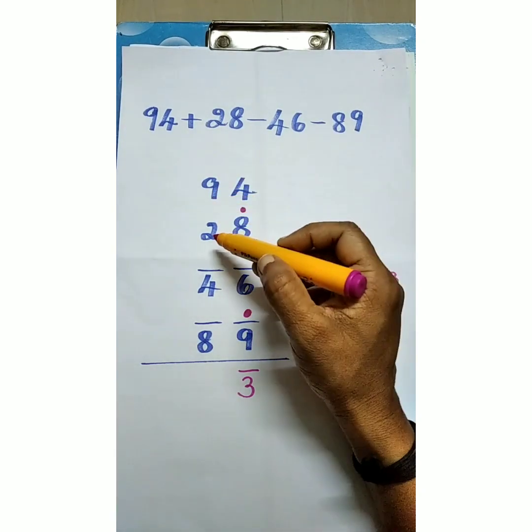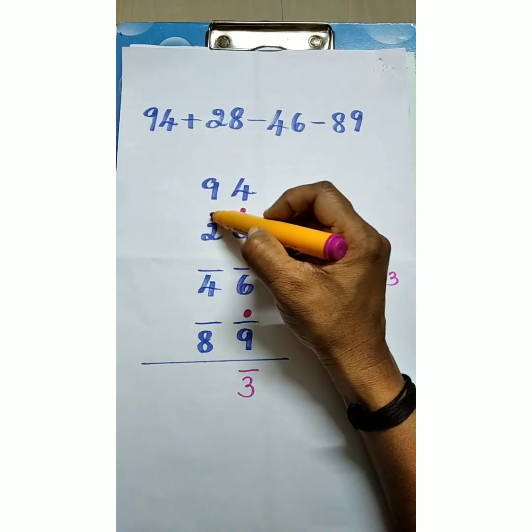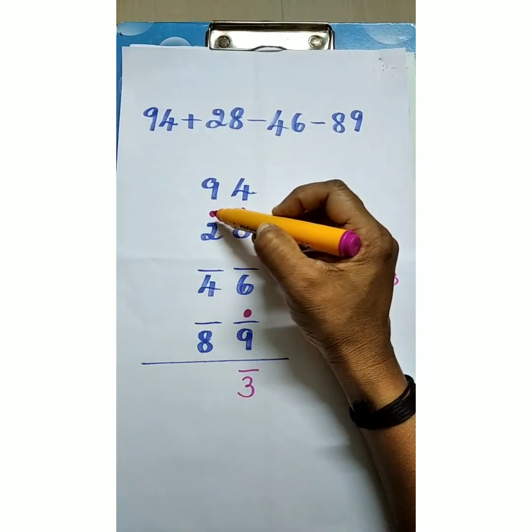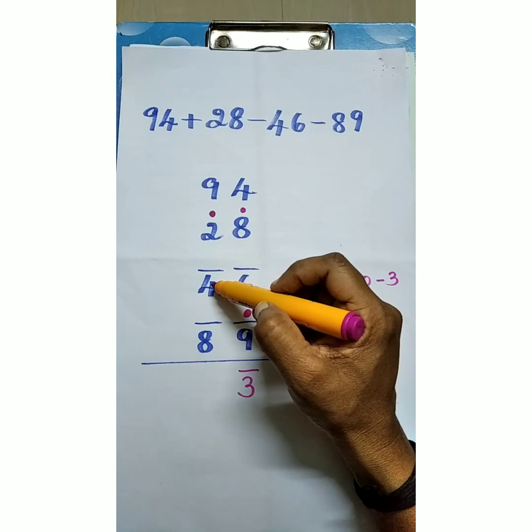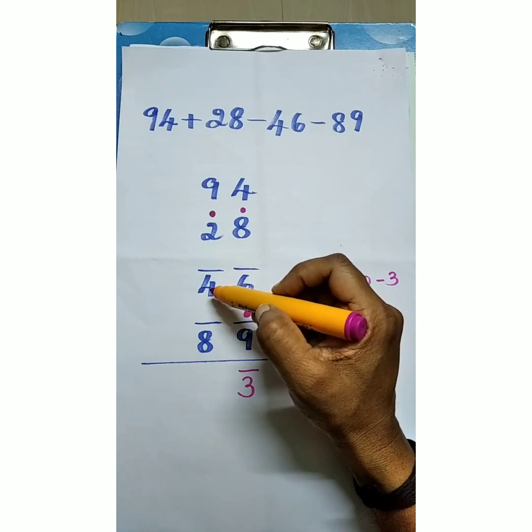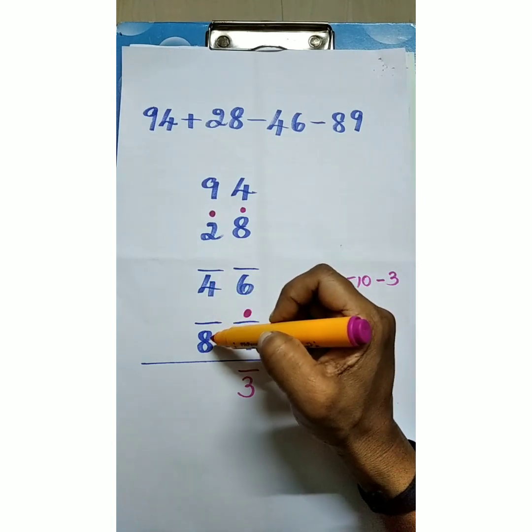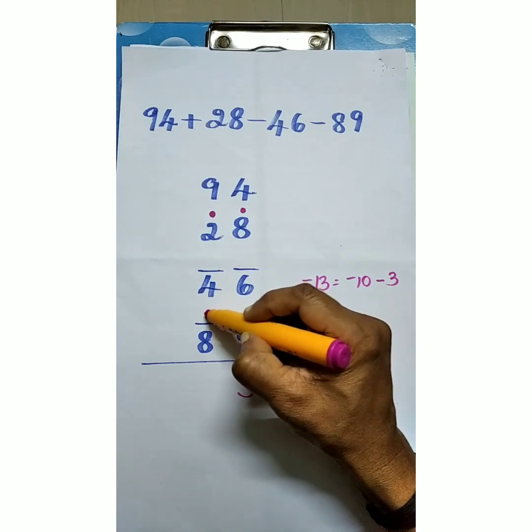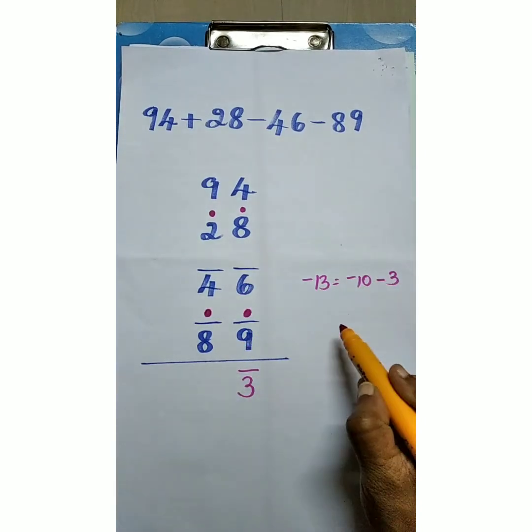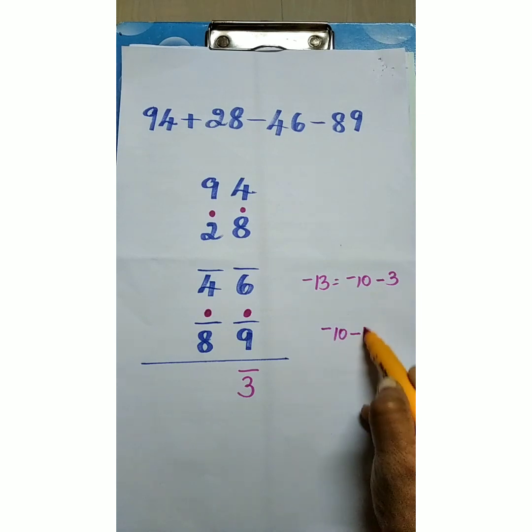Now 9 plus 2 is 11. That is 10 plus 1. 1 leftover. 1 minus 4 is minus 3. Minus 3 minus 8 is minus 11. So minus 11 is minus 10 minus 1.